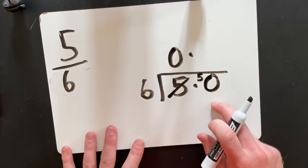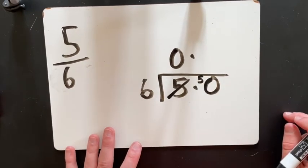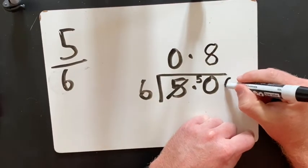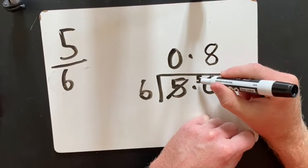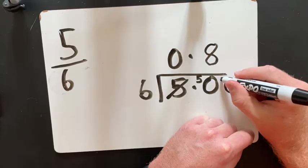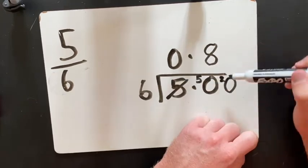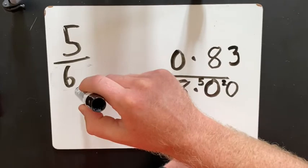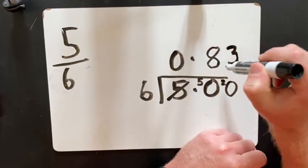How many 6s in 50? There are 8. Put another 0 down. So 6 8s are 48. So that gives me 2 remainder. How many 6s in 20? There are 3. So 5 6s is the same as 0.83.